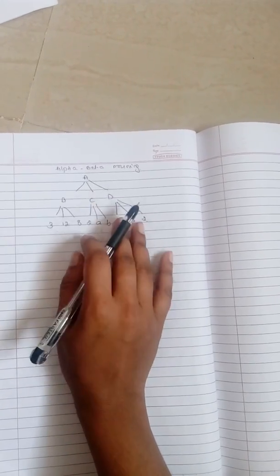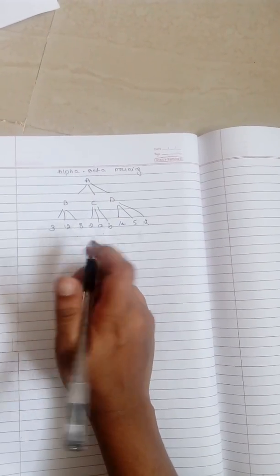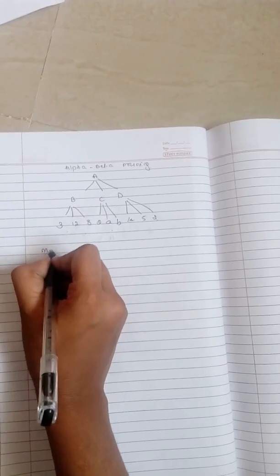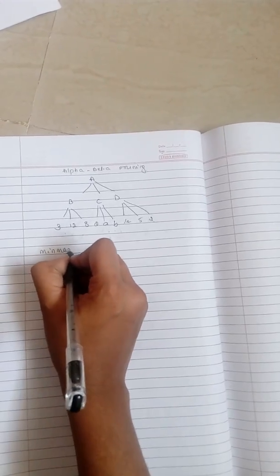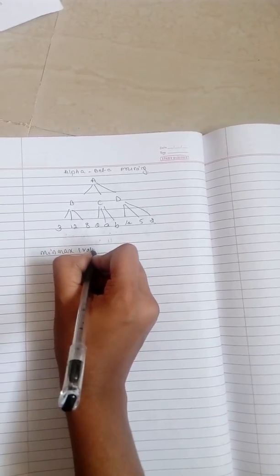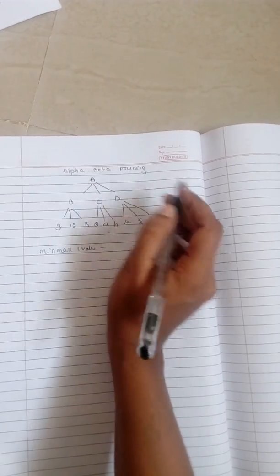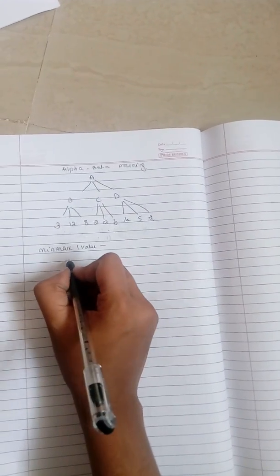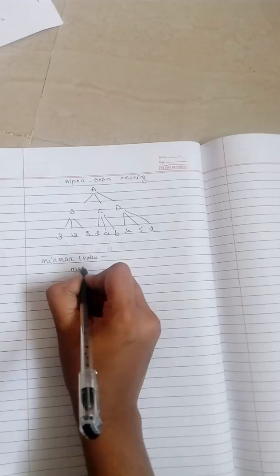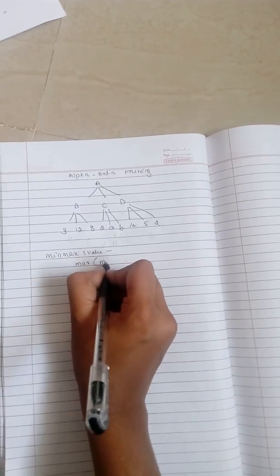So what will be the formula? It has a formula to identify the min-max value of root. The root here is A. Let's consider this example. This can be identified by maximum of minimum value of root A, minimum value of root B, and minimum value of root C.